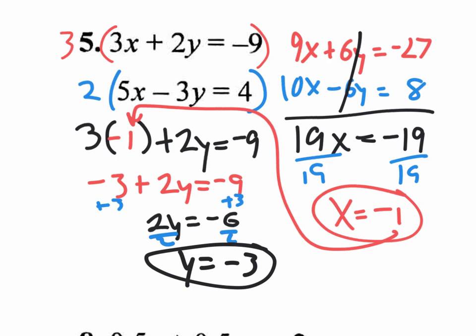As a coordinate, your answer will look like parentheses negative 1, comma negative 3. What that means is, if you were to graph this line on the XY plane, graph this line on the XY plane, they will intersect at negative 1, negative 3.